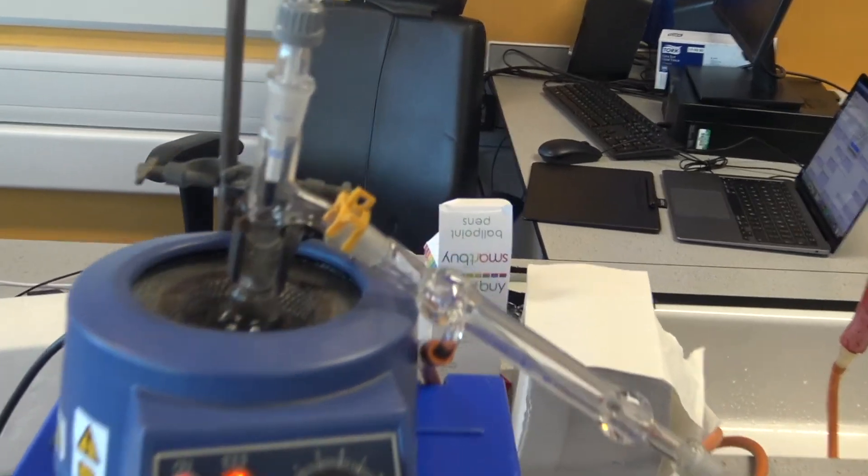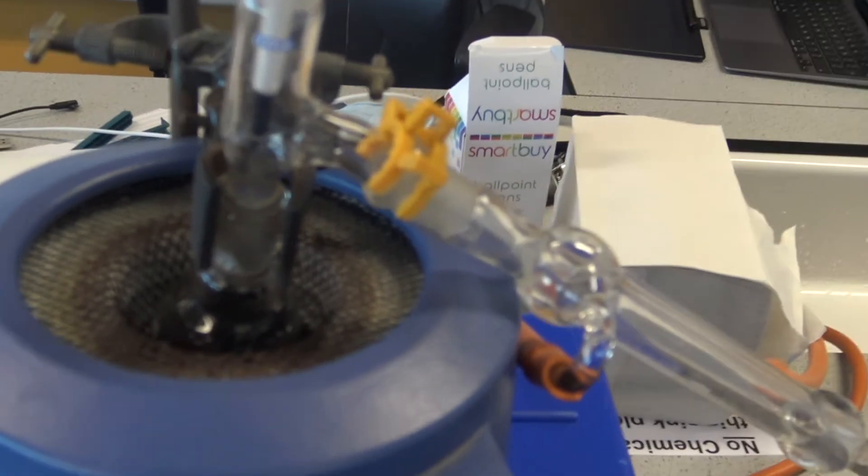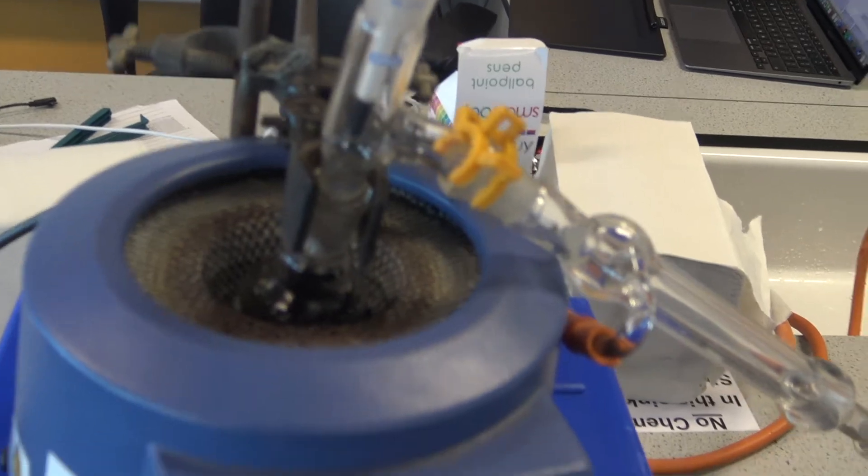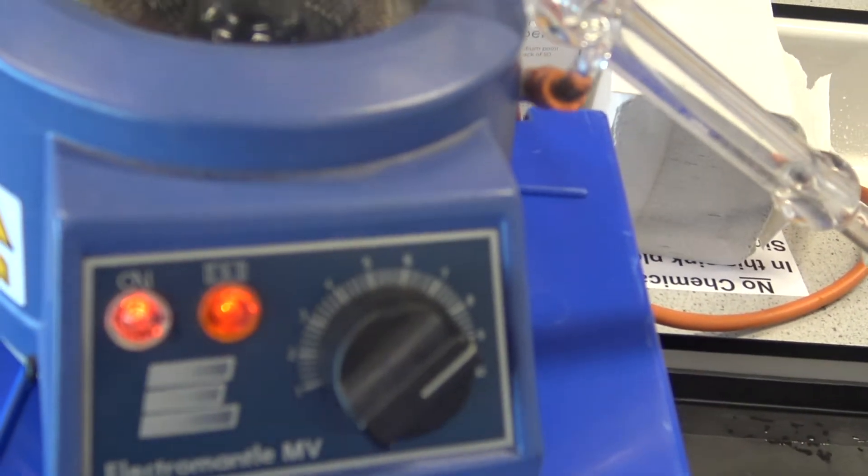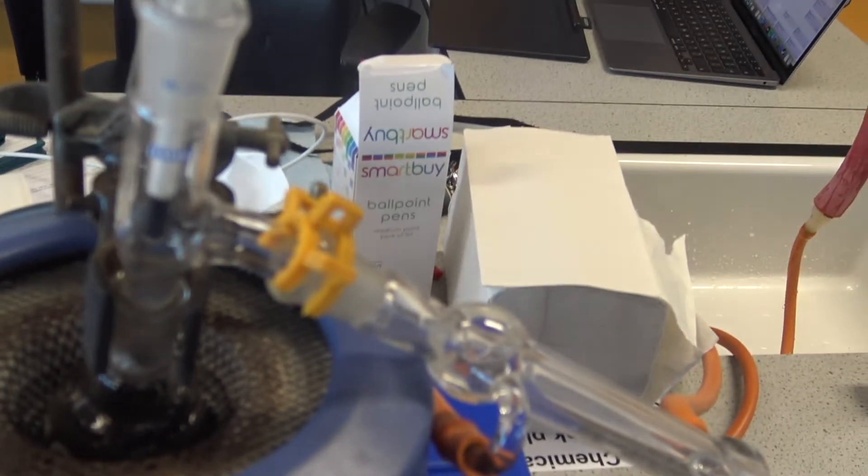So here I have the distillation setup, and I'm using a round bottom flask which is sitting inside. This is a heater that's heating up the mixture I've got inside here, which is actually ink and water.